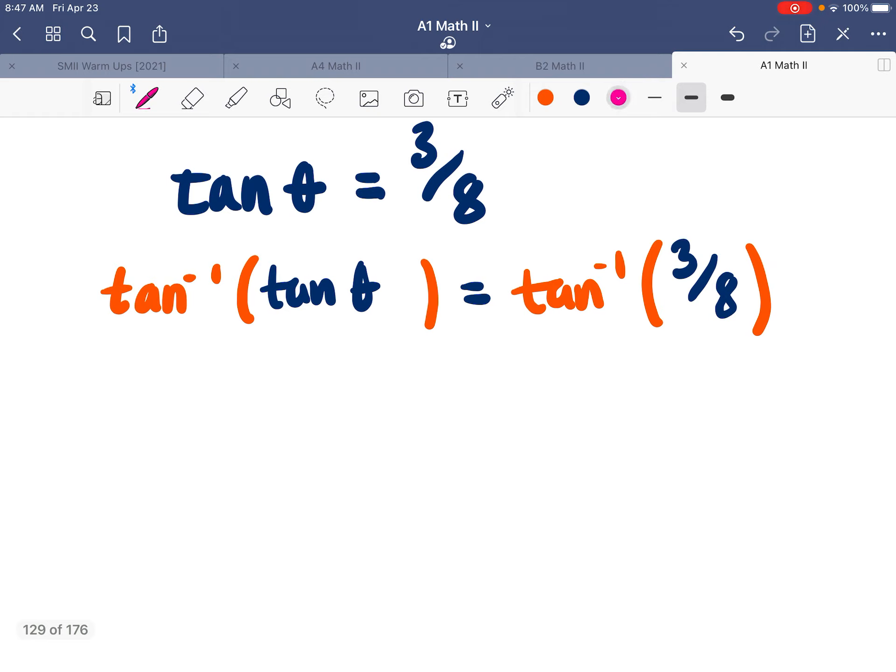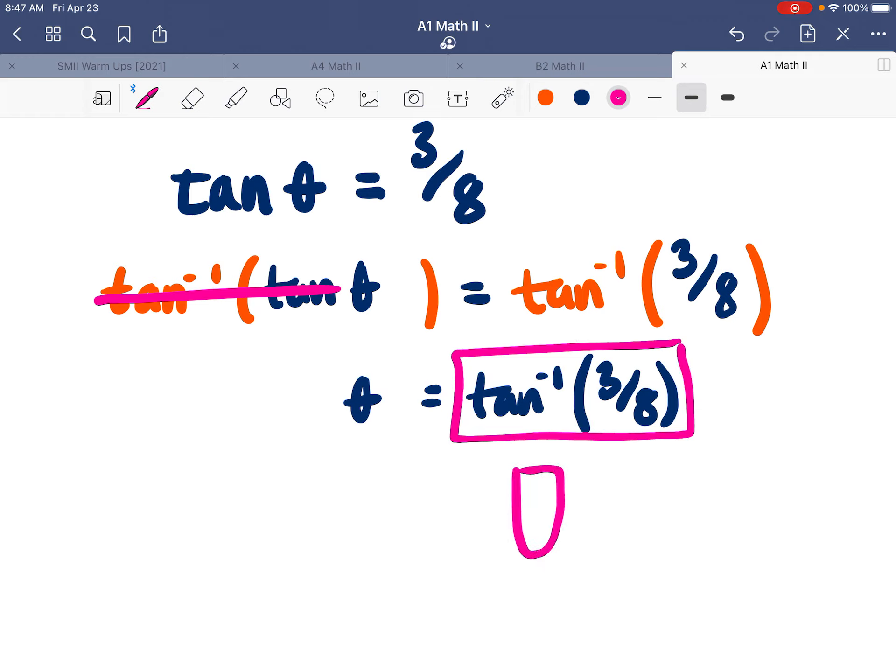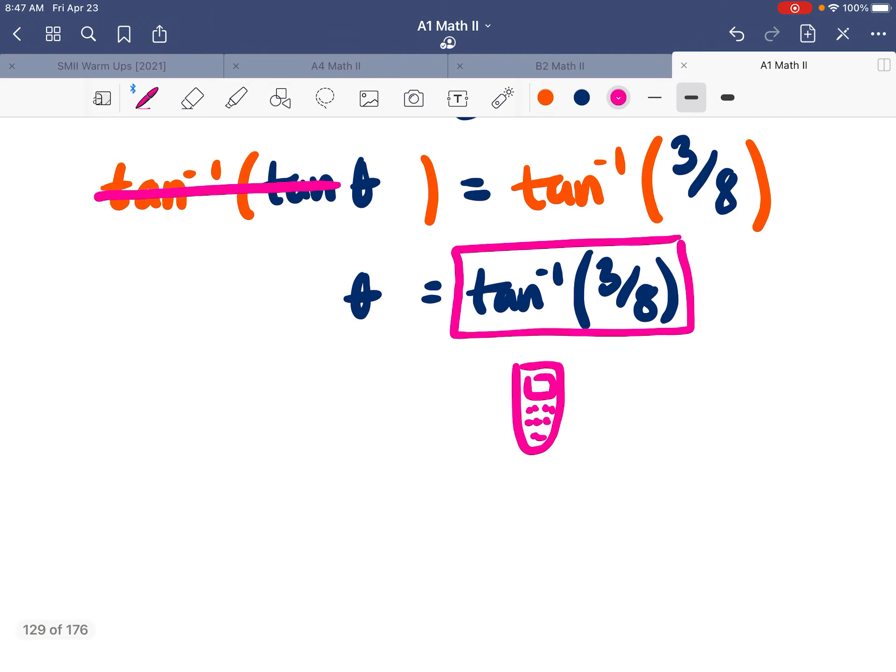So over here, tangent and tangent inverse undo each other, and we're left with only theta. On the other side, we have tangent inverse of a fraction, 3 eighths. And this is something that you can plug into a calculator. Let's draw a little calculator there, so we know what we're doing.